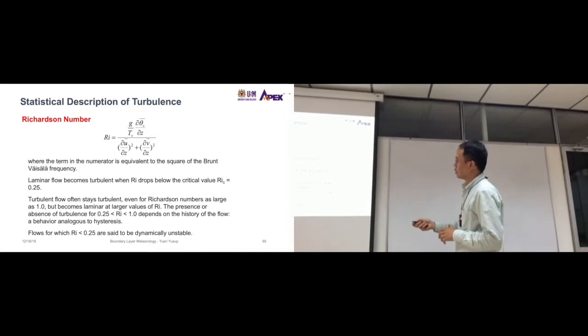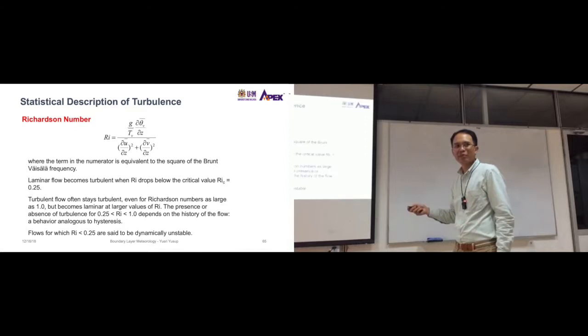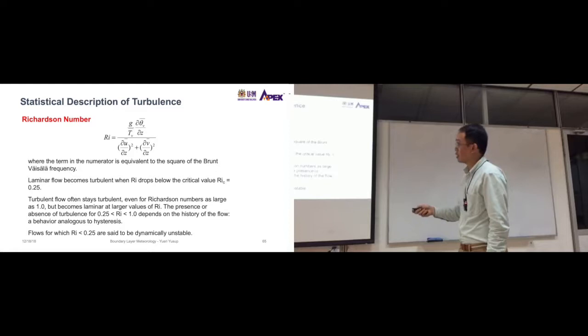So turbulent flow often stays turbulent, so we don't see any laminar flow in the atmosphere. So turbulent flow can often stay turbulent, even for Richardson numbers as large as 1. So even though it's more than 0.25, it can still be considered as turbulent.